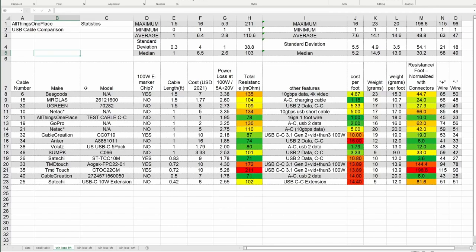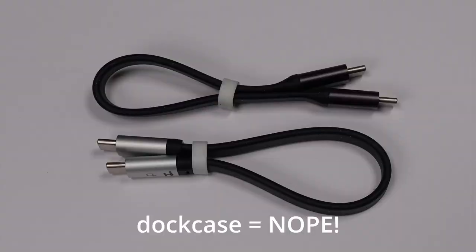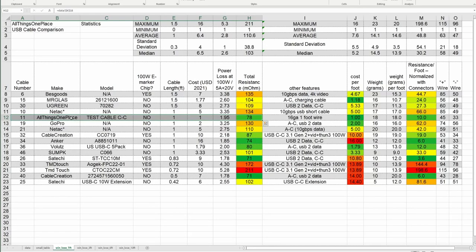And now the largest category, the short cables, the 1.5-foot and under. And these are kind of all over the place. So there were these two cables here that were kind of expensive and did very poor. My own homemade cable, the all-things-one-place cable, of course, is a very solid performer. The cable creation is a 1-foot cable with all the things in it. So for the cost, you get a very strong performing cable. And it's in the middle for cost per foot.